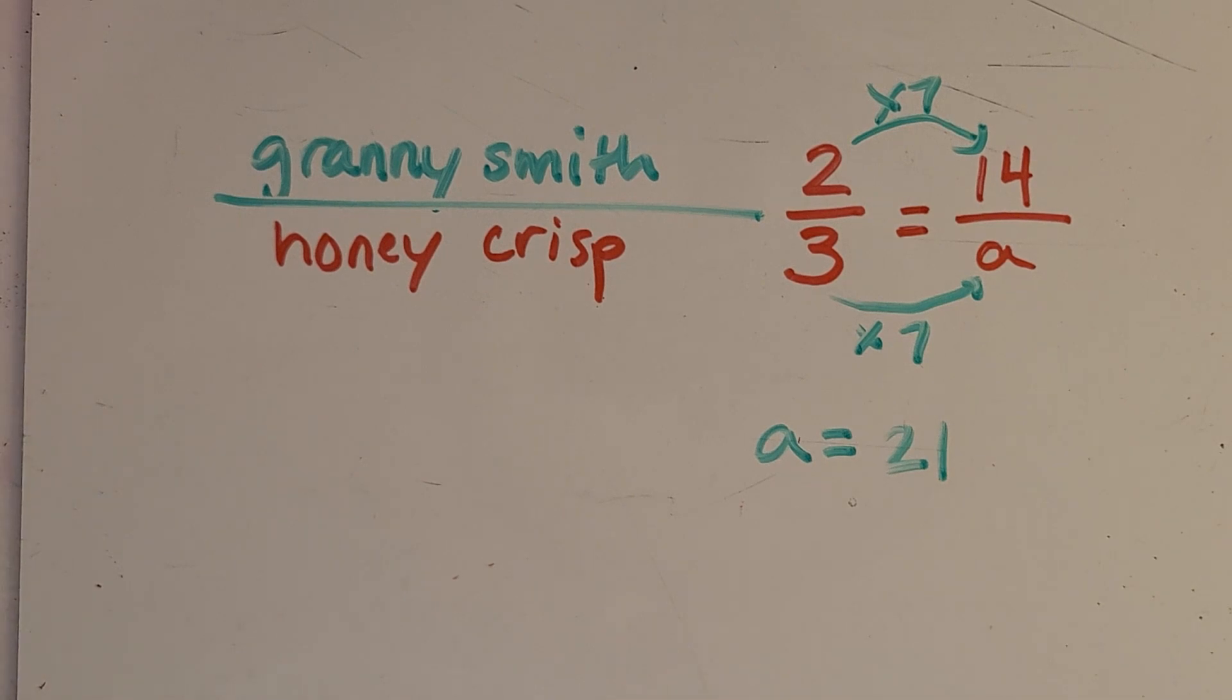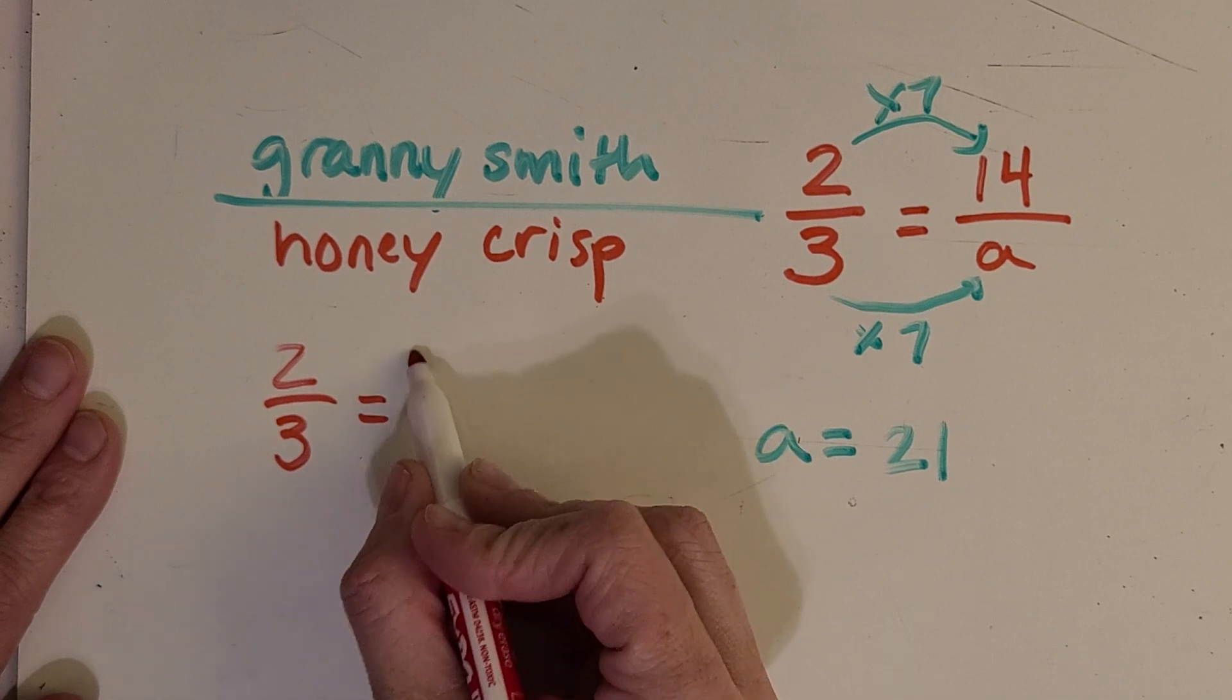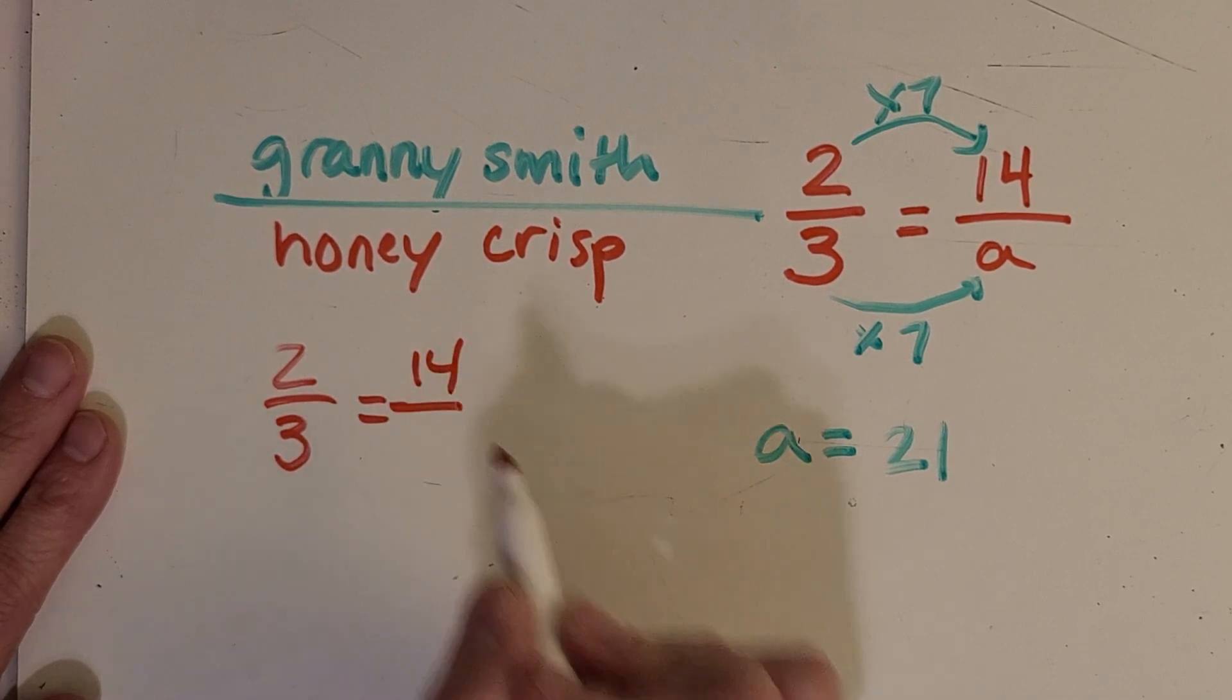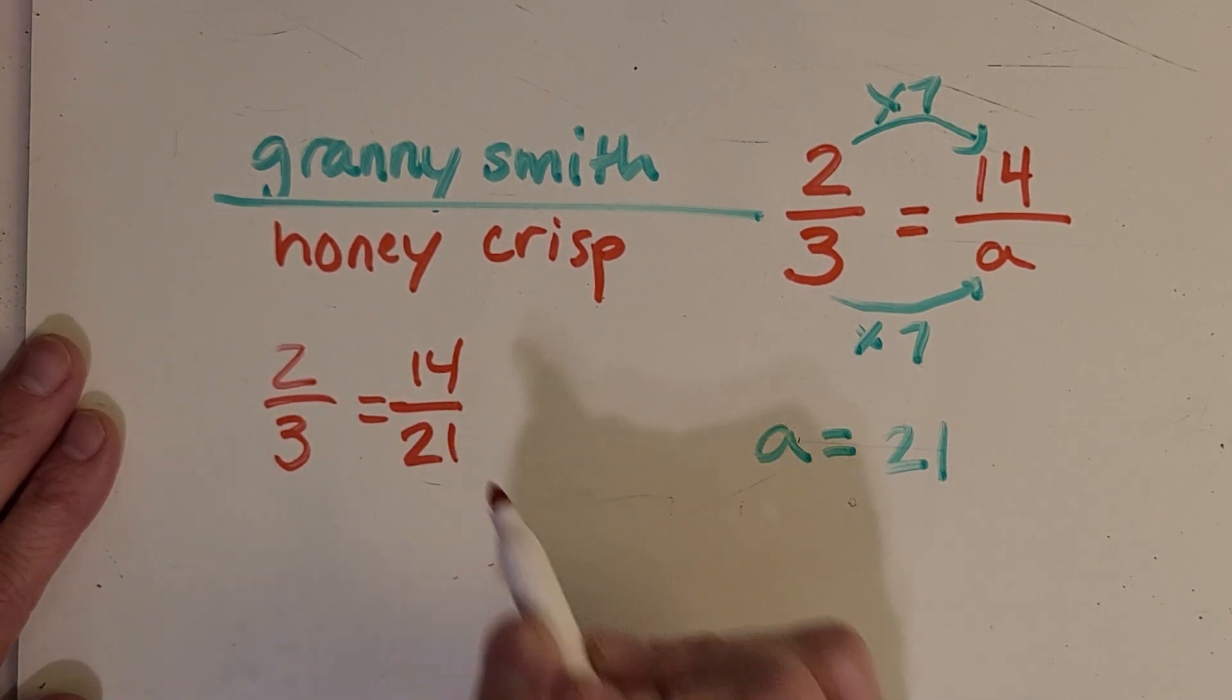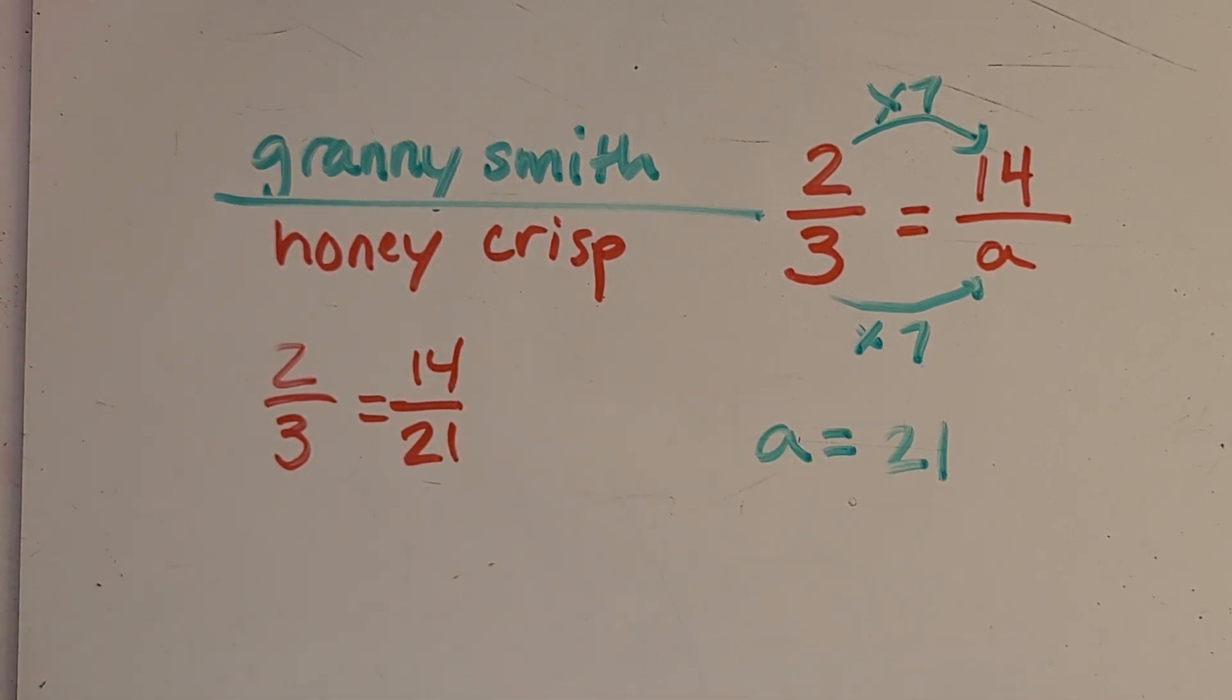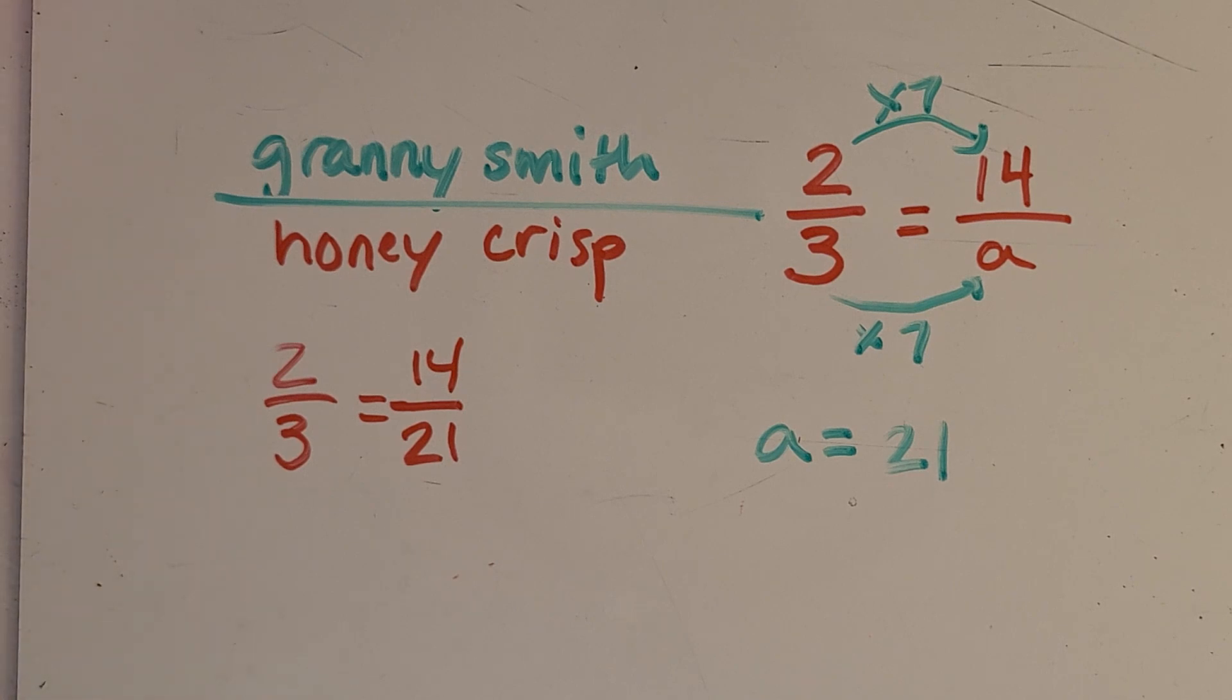So that means I'm going to need to buy 21 Honeycrisp apples to keep that ratio going. So let's write the proportion with the number instead of A. All right, that looks great. I'm seeing a pattern still, times 7 times 7. They look like equivalent fractions, so I know I did a good job.